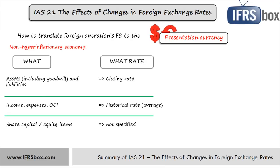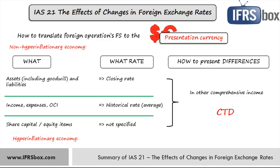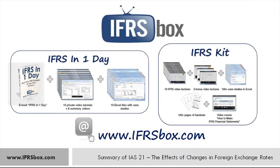All resulting exchange rate differences shall be presented in equity as a separate component called CTD — currency translation difference — or in some other appropriate way. When a currency of a hyperinflationary economy is involved, the entity should first restate its financial statements in line with IAS 29 Financial Reporting in Hyperinflationary Economies, and only then apply the same procedures as described. That was a short summary of IAS 21. Thank you for watching, and if you want to take your IFRS knowledge deeper, learn IFRS with me and sign up for email updates at ifrsbox.com. Thanks again and have a nice day!